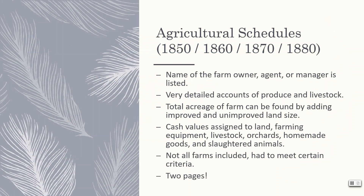The first schedules we'll focus on are the agricultural schedules. These schedules document land ownership and farming operations in each county. The schedules list the name of the farm owner, agent, or manager, the amount of land owned, and the crops and livestock cultivated on that property. You can calculate how much total land an individual owned by adding the improved and unimproved acreage together. Cash values were assigned to the land, farming equipment, livestock, orchards, homemade goods, and slaughtered animals. Keep in mind, not all farms were included — depending on the year, the farm had to meet certain size and value criteria to be included. Also note that with the exception of the 1880 agricultural schedule, they are all two pages long. The 1880 schedule was reorganized to capture all of the information on a single page.